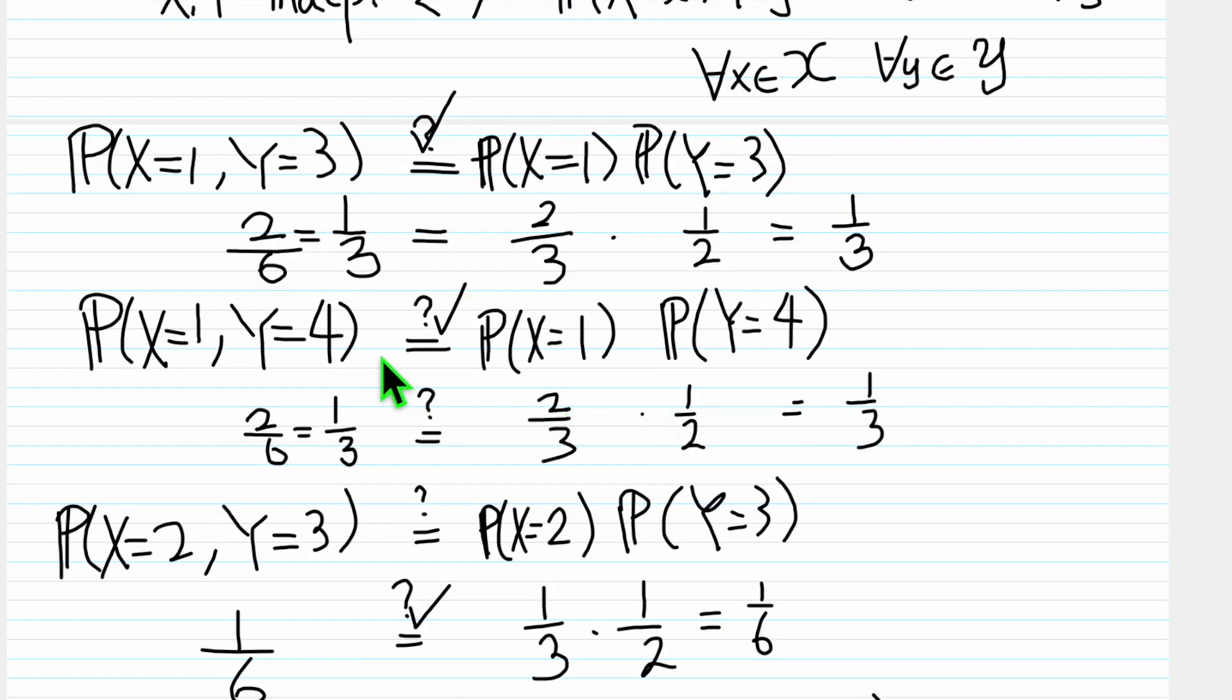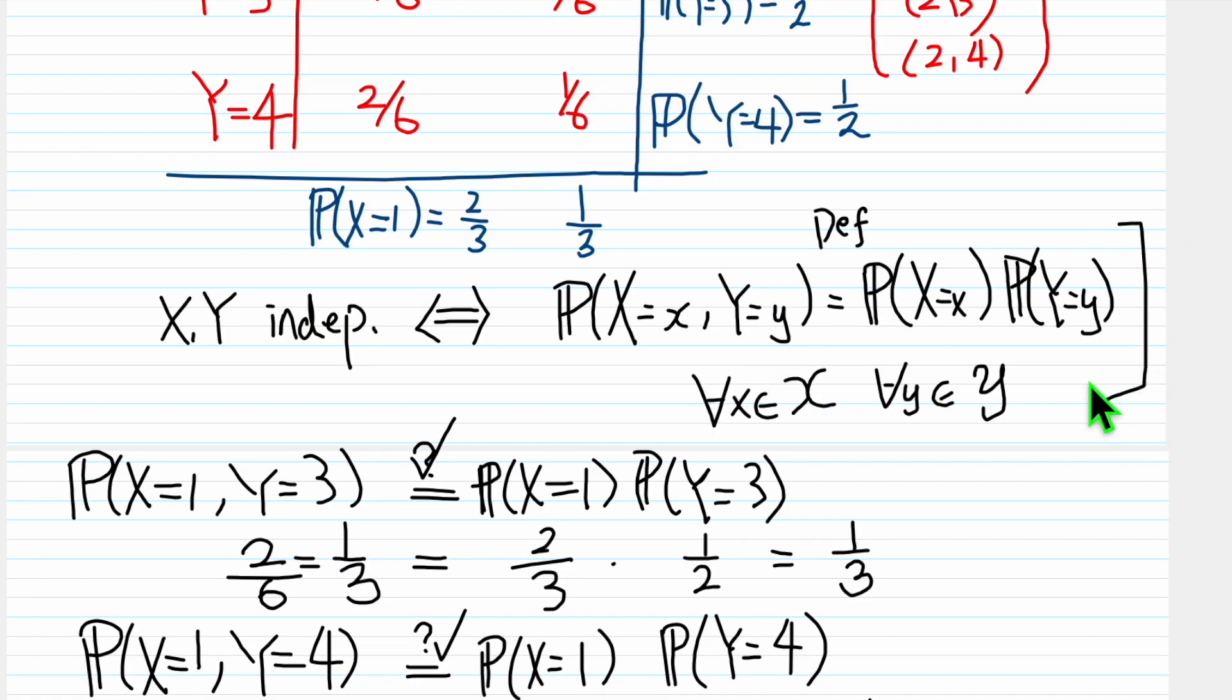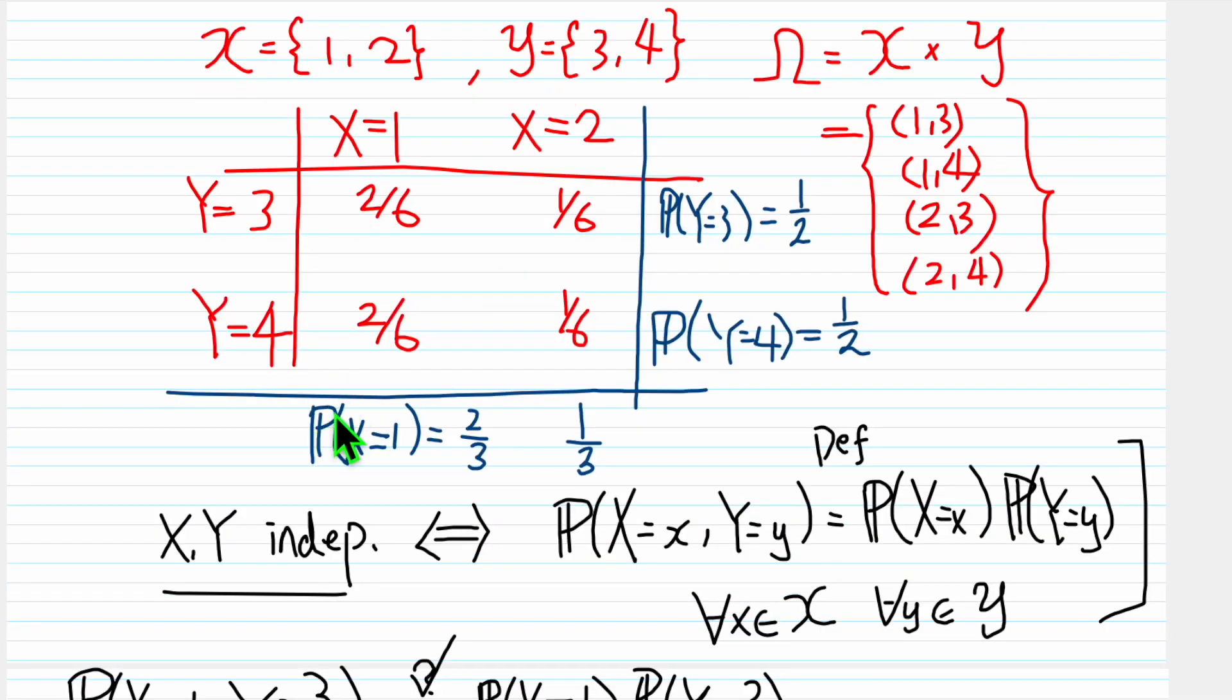So therefore, for all the four cases, this is true, and if this is true for all cases, then X, Y are independent. So in this particular case, X, Y are independent.